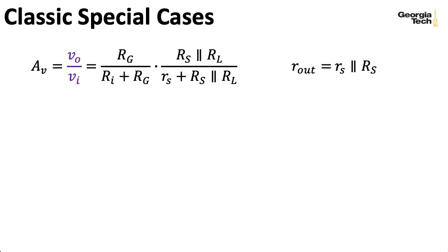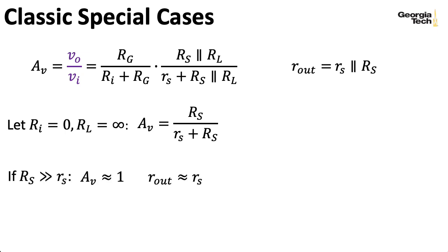So if we assume for a moment that RI is zero and RL is infinite, then our gain is given by this expression. And if we also assume that our fixed resistance at the source big RS is bigger than little RS, the intrinsic dynamic resistance of the JFET, then this quantity here is approximately 1 because little RS is negligible compared to big RS and these cancel. We could also say that our output resistance is approximately little RS. It has gain that's definitely going to be less than 1. But the point of the circuit is not to provide amplification. The point of the circuit is to have a very high input impedance and a very low output impedance, so it makes a nice voltage buffer.